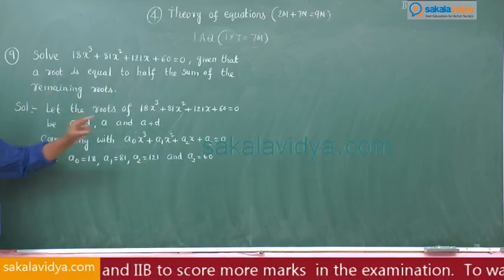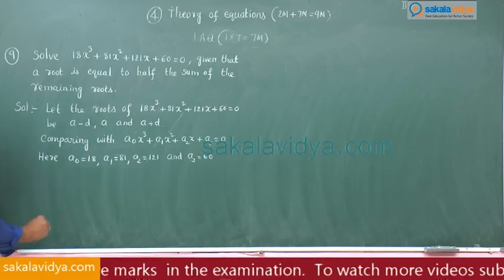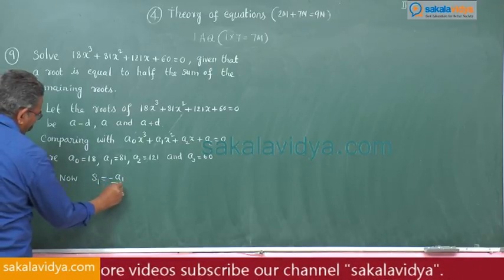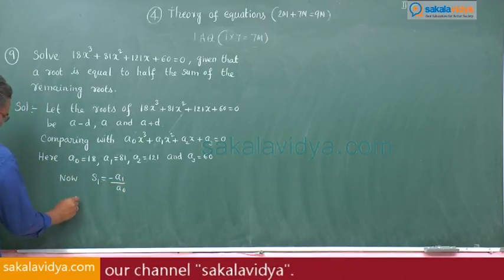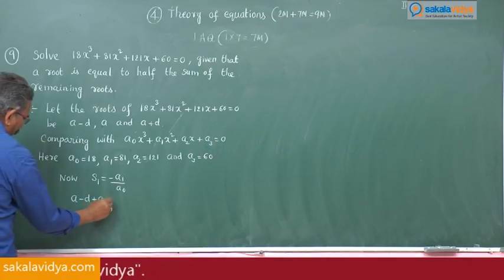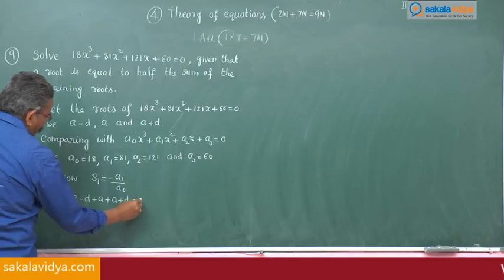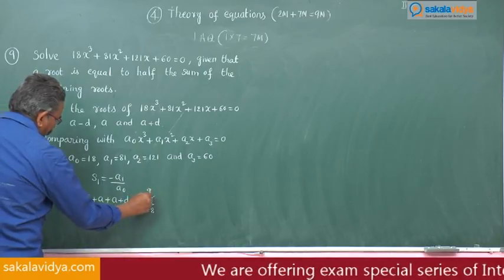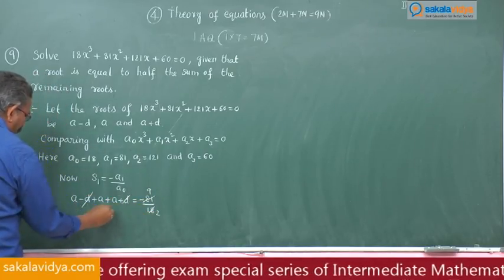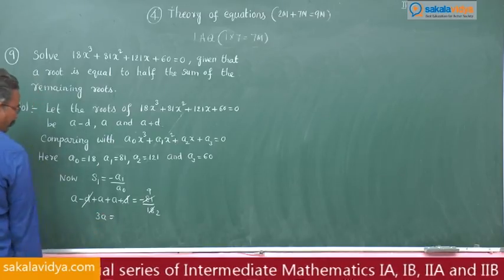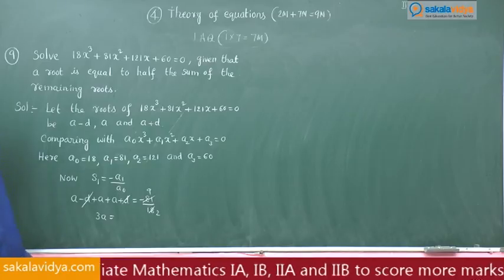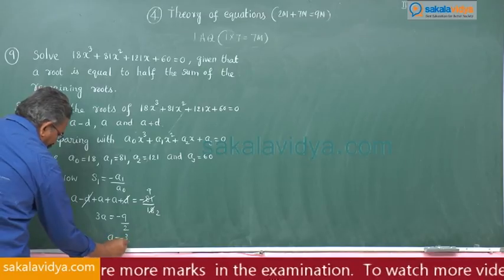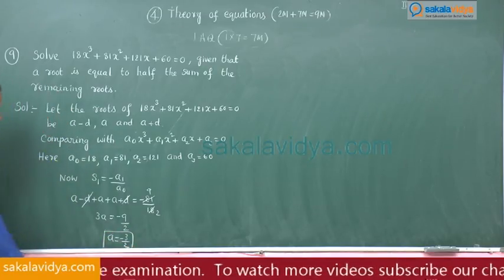Since the roots are in arithmetic progression, take the sum of the roots. S₁ = -a₁/a₀, so (a-d) + a + (a+d) = -81/18. The d terms cancel, giving 3a = -9/2, therefore a = -3/2. One of the roots is -3/2.